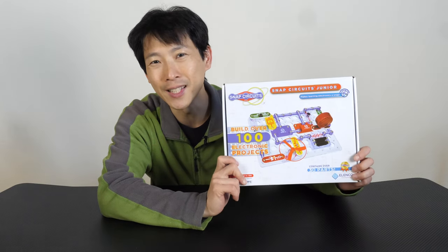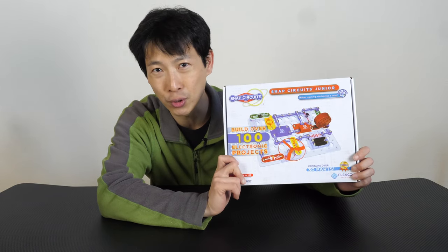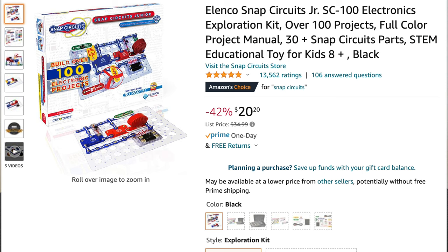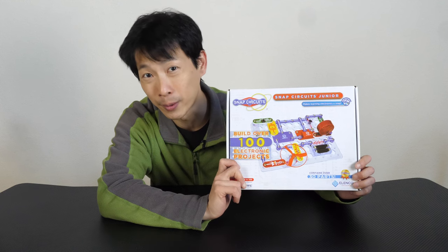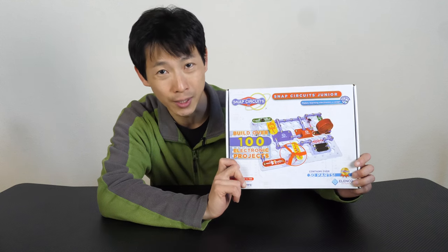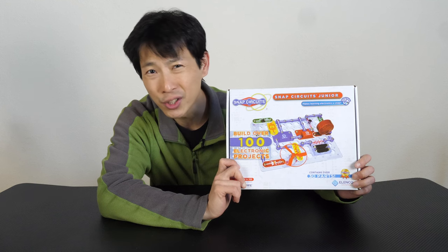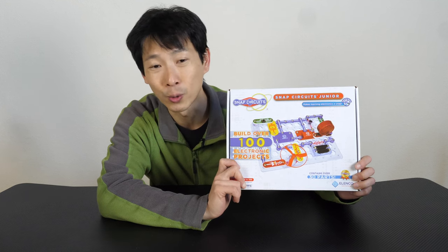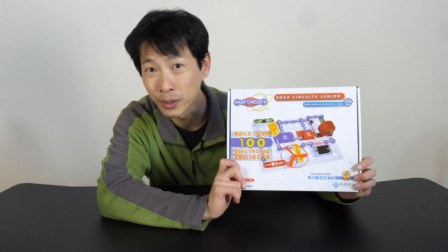How's it going everybody? This is Bita Bush. This is the 100 snap circuits set. It goes for about $21 on Amazon so it's a very low price way to get into electronics and there's not much math involved so this is a really fun way to do it.